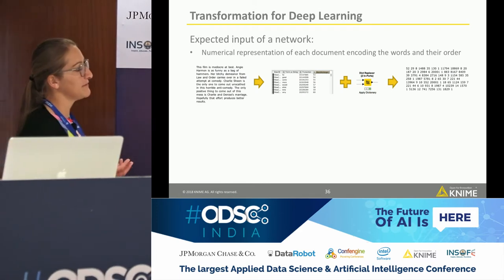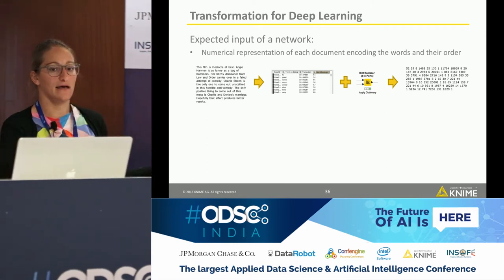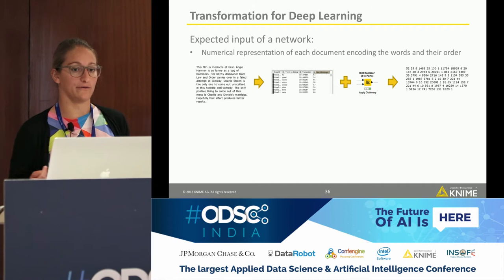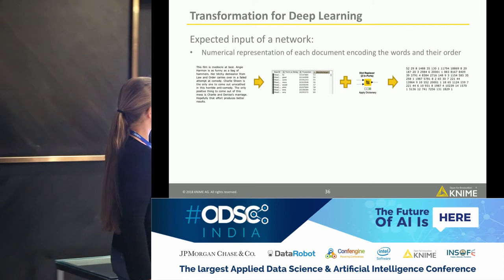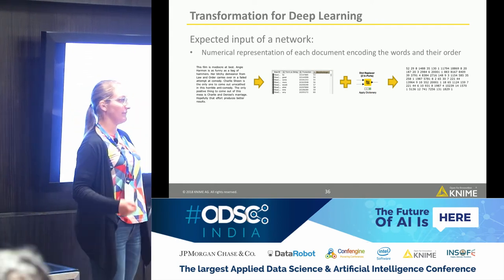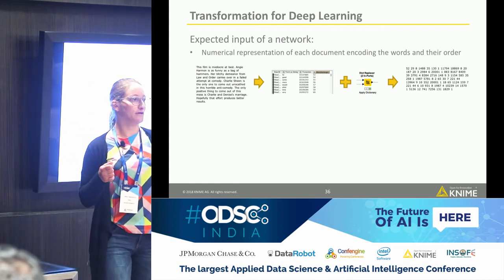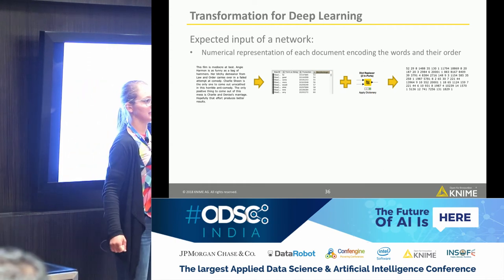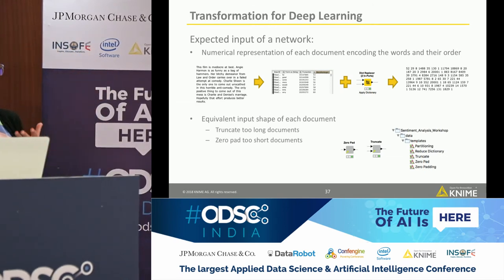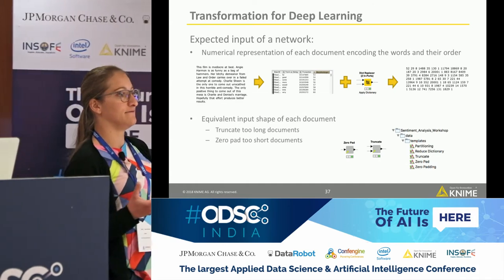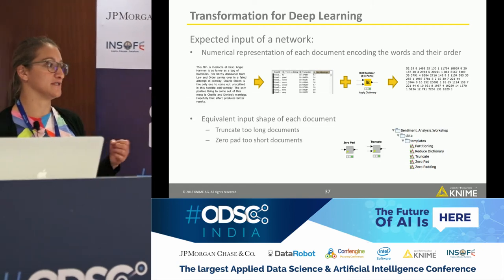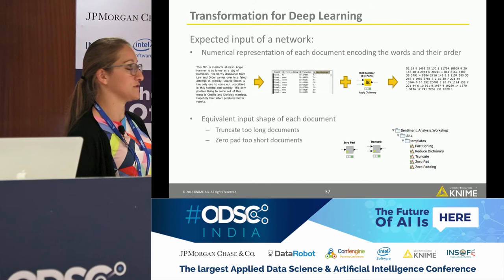Pre-processing for deep learning is a bit different. We first create a dictionary assigning each word a number, then use a dictionary replacer node to replace all words in documents with their numbers — giving a document containing only numbers. Then we apply truncation and zero-padding to ensure every document has the same input shape: define a maximum number of words, cut documents that are too long, and fill shorter ones with zeros. For Twitter data you know the size well; for mixed documents you need to find a tradeoff.